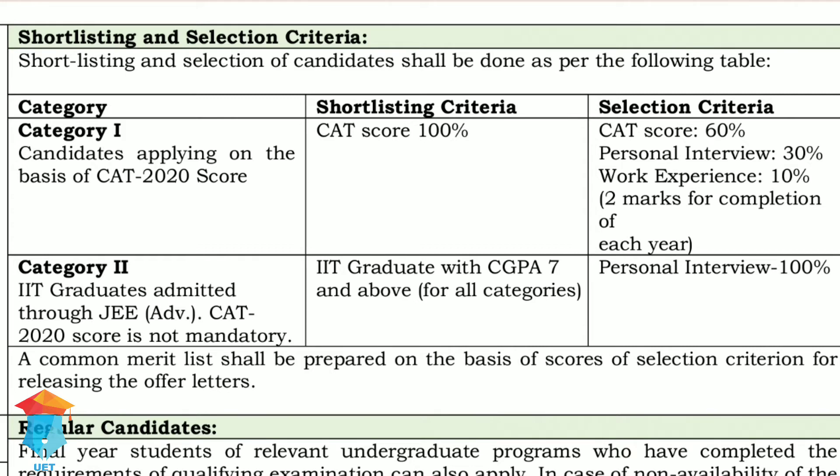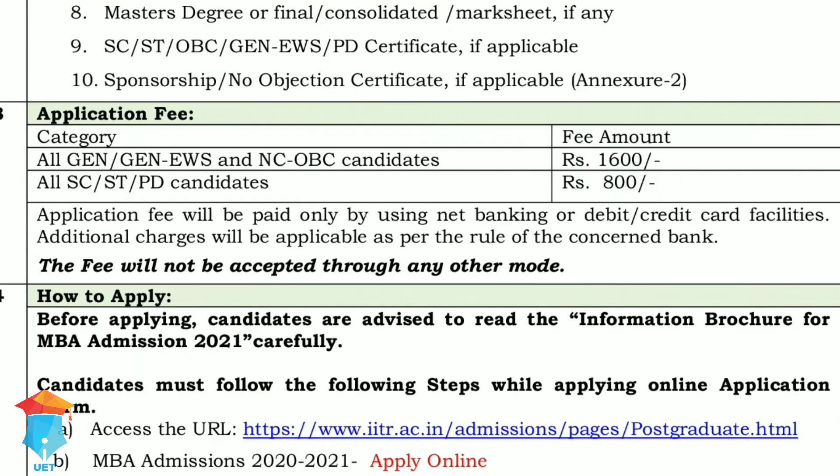Moving on to the application fee, the fee for General, EWS, and OBC candidates is 1600 rupees, and for SC, ST, and PWD candidates the fee is 800 rupees.